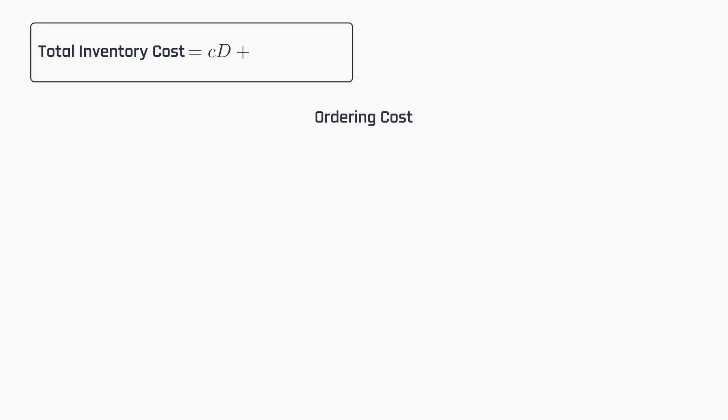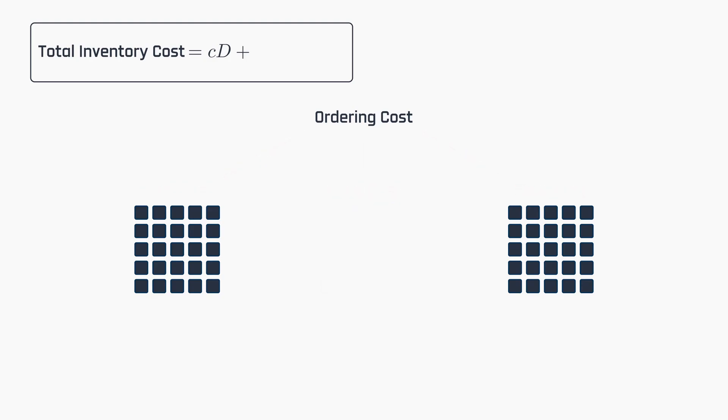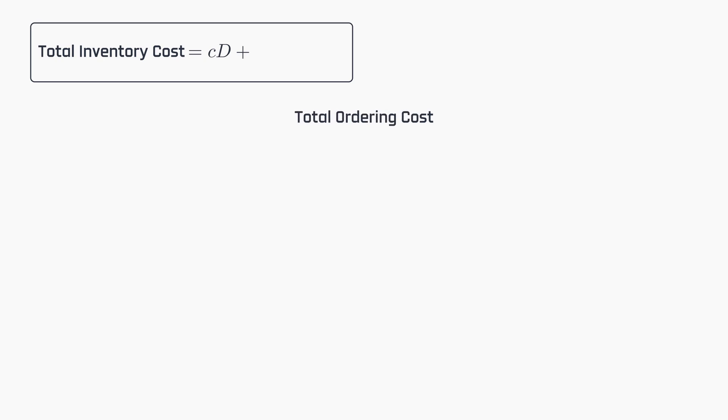Ordering cost, also referred to as setup cost in manufacturing, is a fixed cost incurred with each batch production or lot purchase. Its defining characteristic in modeling is that it remains constant, irrespective of the lot size Q. Accordingly, the total ordering cost is solely based on the number of replenishments throughout the year.